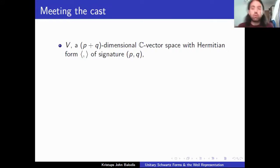So V throughout is going to be a complex vector space of dimension p + q, and it's got a Hermitian form of signature (p, q). So what that means is we've got an inner product, except now you can have non-zero vectors having inner product zero with itself. And the (p, q) refers to the fact that we can always find a basis so that p of those vectors have a positive inner product with themselves, and q of them have a negative inner product with themselves.